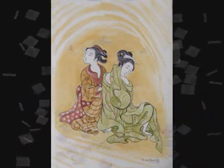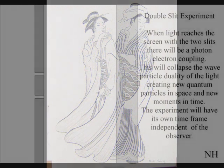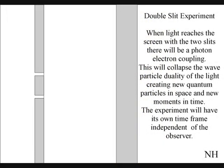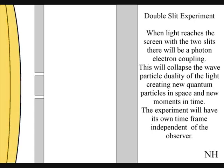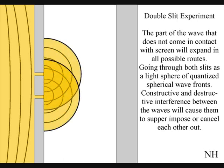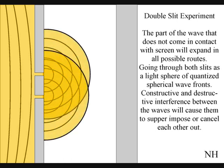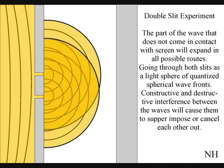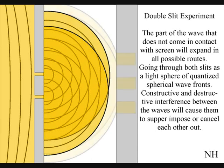The best way to see this happen directly with light is in the two-slit experiment. The light will expand in all possible directions as a wave-particle function. When it reaches the screen with the two slits, the photon will react with the electrons of the screen, collapsing the wave-particle duality and creating new moments in time and new quantum particles in space. The part of the wave that does not come in contact with the screen will expand in all possible routes, going through both slits. When this wave-particle function comes in contact with the screen, it will collapse, creating moments in time and quantum particles in the shape of an interference pattern.